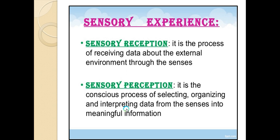In sensory perception, the brain selects, organizes, and interprets data from the senses into meaningful information. So sensory reception is receiving data through different sense organs, while sensory perception is developing meaningful information by selecting, organizing, and interpreting that data. Together these form the sensory experience, divided into sensory reception and sensory perception.